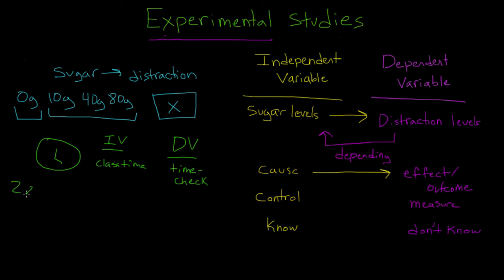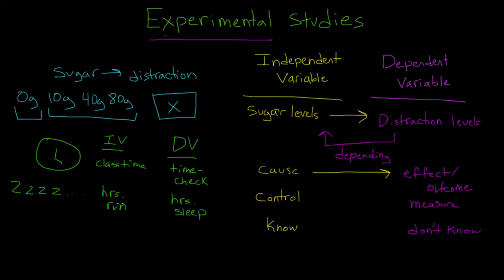Or maybe I want to look at how the amount of exercise we get during the day influences how much we sleep each night. In this case, our independent variable would be the amount of time someone spent exercising — say, the number of hours they run during the day — and this is something we control. We can have participants come in and run different lengths. Then our dependent variable would be the number of hours that they sleep. I have control over the hours they run, but not the hours that they sleep — the sleep is depending on the number of hours they run.